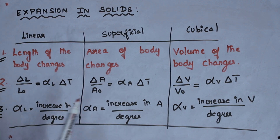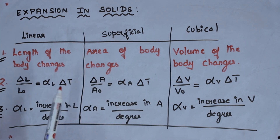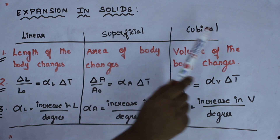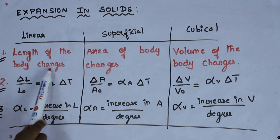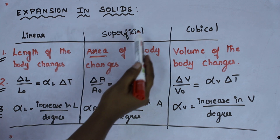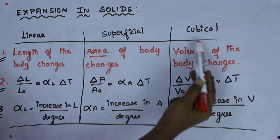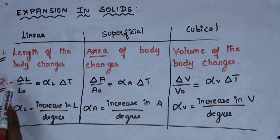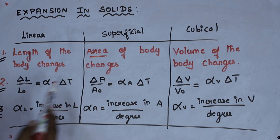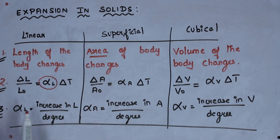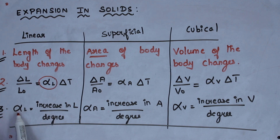To make understanding easier, I have written all three expansions in a tabular column. There are three types of expansion in solid: linear expansion, superficial expansion, and cubical expansion. If the length of the body changes due to the rise in temperature, it is linear expansion. If there is an increase in area, it is superficial expansion. If there is an increase in volume, it is cubical expansion. The formula delta L by L₀ equals alpha L times delta T gives the coefficient of linear expansion — increase in length per degree rise in temperature of its unit length.